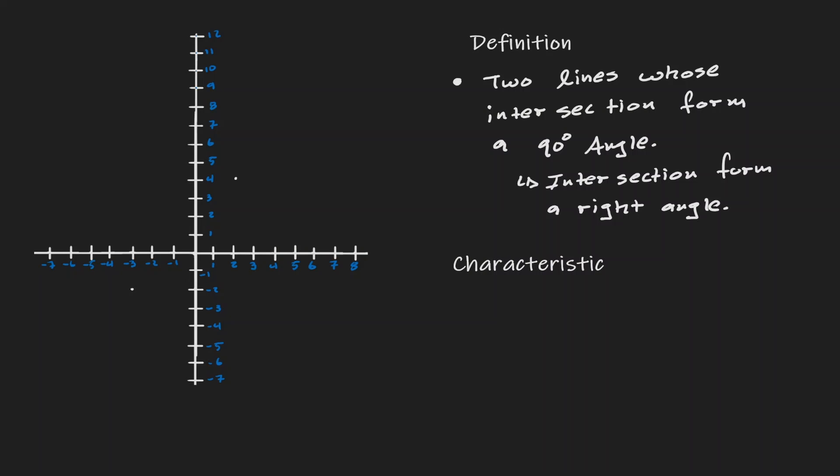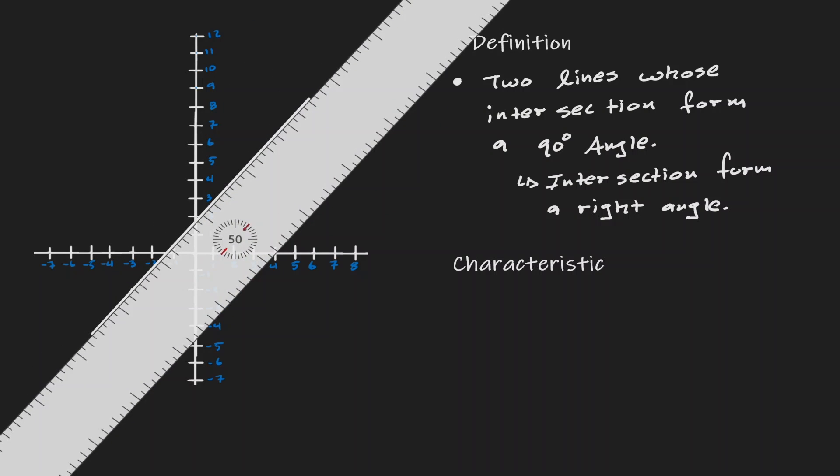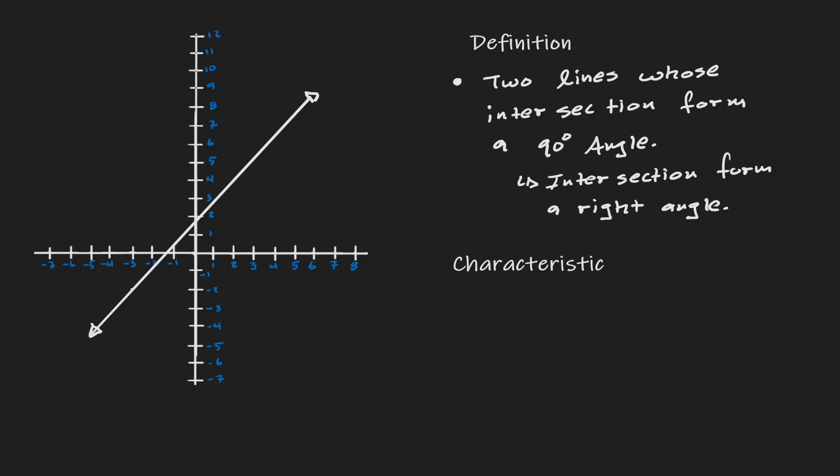But what if we draw a diagonal line? How would the perpendicular line of a diagonal line look like? Well let me identify two points on this diagonal line: negative 3 comma negative 2, and 3 comma 5.